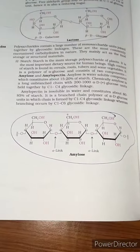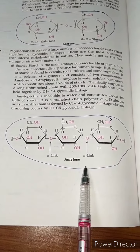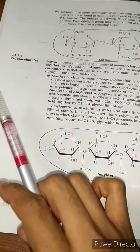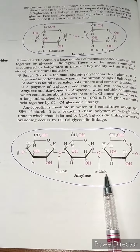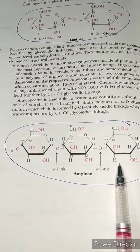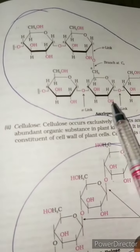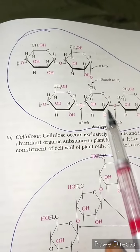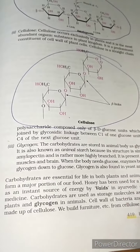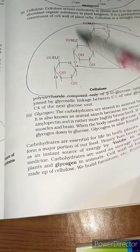For polysaccharides, amylose and amylopectin are both made of glucose units connected in chains. Cellulose is also made of glucose units connected in a specific way. These are the main polysaccharides to know.